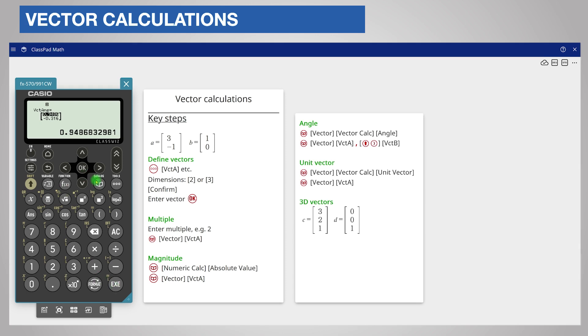Choose angle as before from the catalog menu through vector, vector calculation, and then angle. Enter your vectors through the catalog menu, vector, and this time we want vector C. Remember the comma which is shift close brackets and choose vector D.